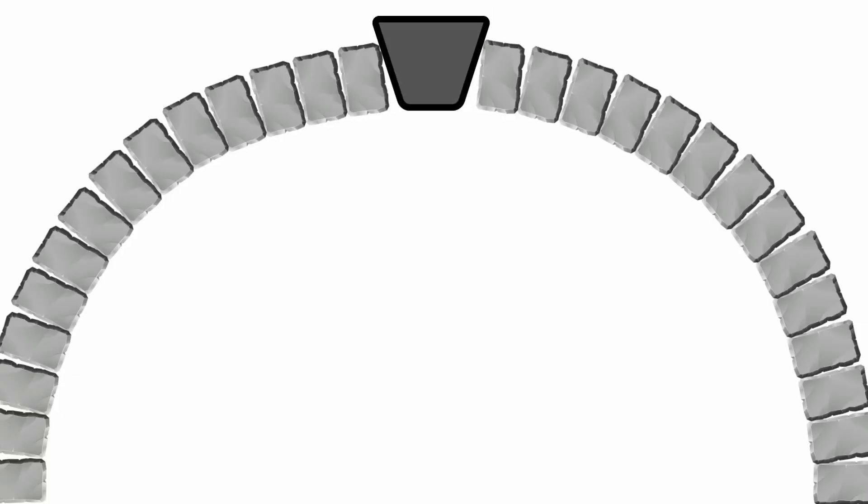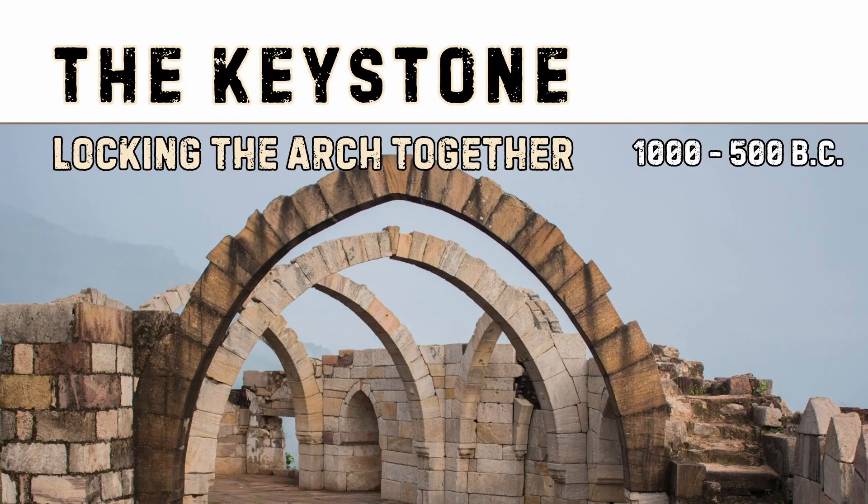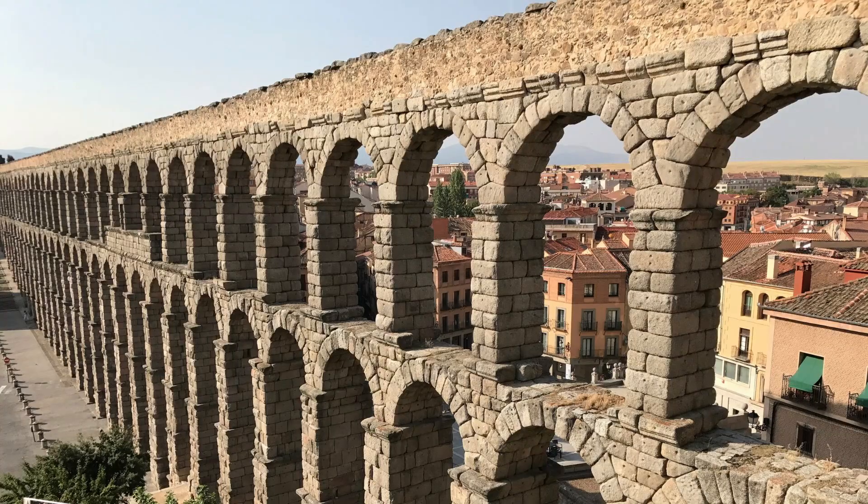But it wasn't until later, around 1000 to 500 BC, that the Romans used a special method by simply replacing one single element on the arch to make it stronger and more stable, which allowed them to build impressive engineering marvels using this keystone element.